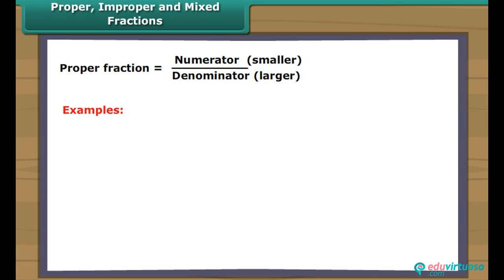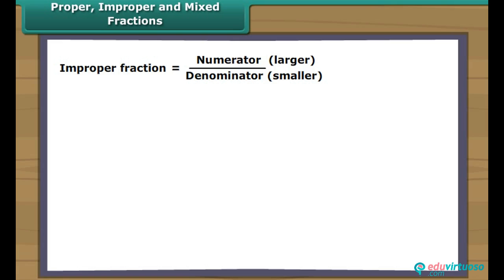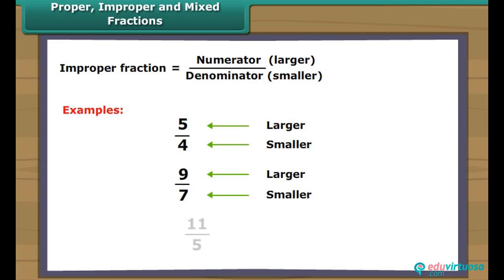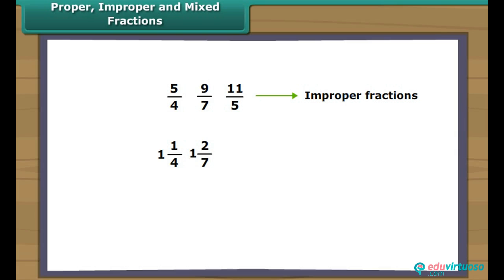For example, three-fourths, two-fifths, and seven-ninths are proper fractions. In an improper fraction, the numerator is greater than the denominator — for example, five-fourths, nine-sevenths, and eleven-fifths. Improper fractions can be written as a combination of a whole number and a proper fraction, giving us one and one-fourth, one and two-sevenths, and two and one-fifth respectively. Such fractions are called mixed fractions.